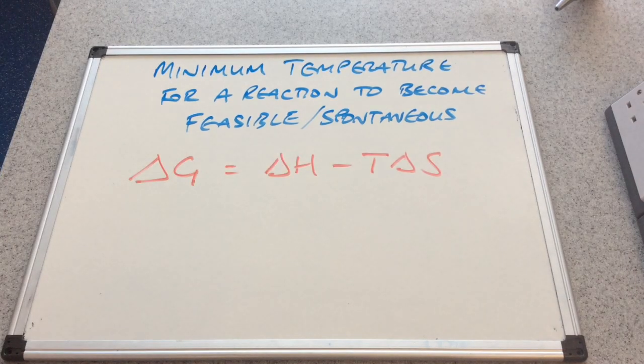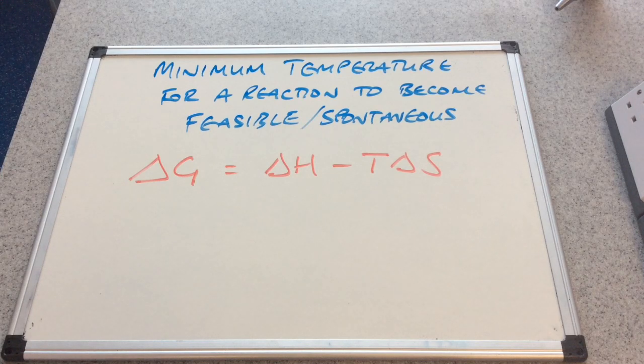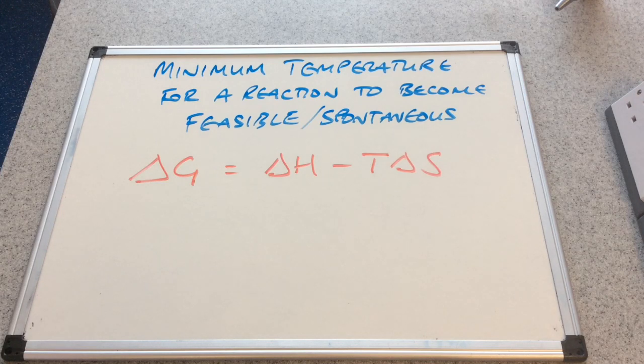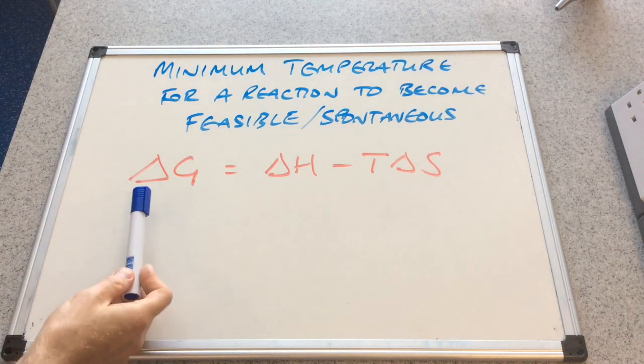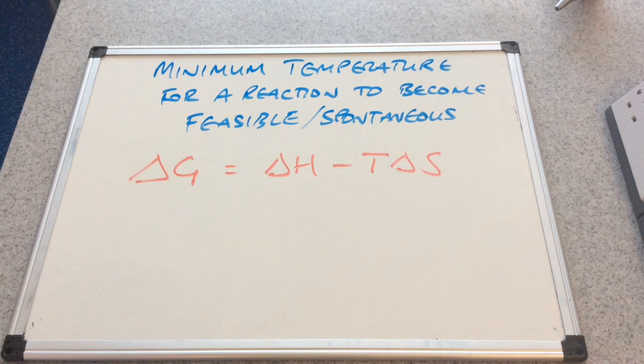So there is the Gibbs equation: delta G equals delta H minus T delta S. And we said in a previous video that for a reaction to be spontaneous or feasible, delta G must be less than or equal to zero.